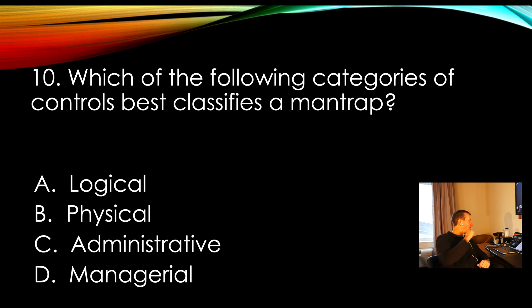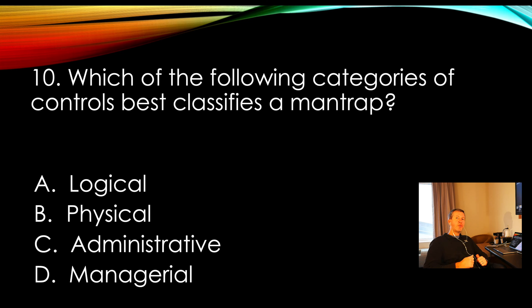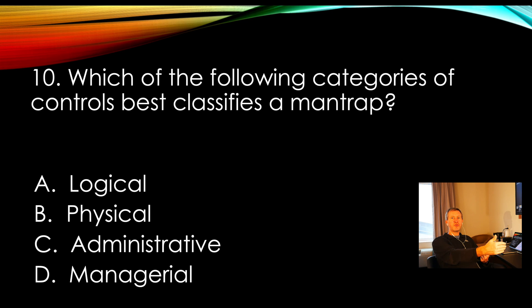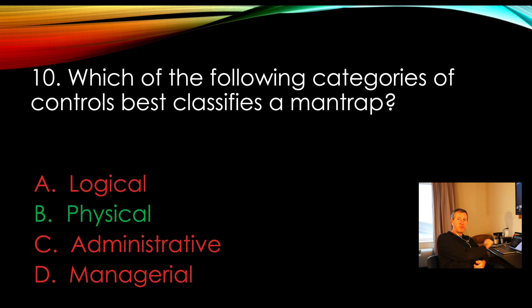Let's move to question number ten. Which of the following categories of controls best classifies a man trap? Is that a logical control, a physical control, an administrative control, or a managerial control? A man trap is a physical device where you walk in one door, it locks behind you, and then a second door unlocks so you can enter the area. Many are monitored by video or through glass — you cannot enter without the entryway behind you becoming secure first. So that is going to be a physical control.